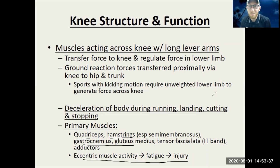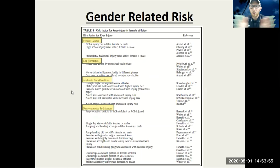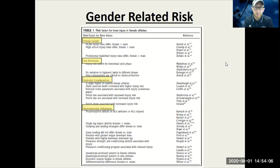A few more different risk factors: different hormones might play a role, anatomical considerations like larger Q angles with normally wider hips, and neuromuscular imbalances — many different things listed as reasons we see higher rates of ACL injuries in females.